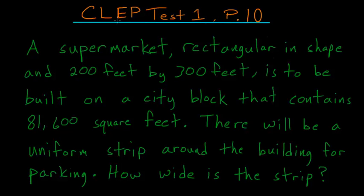In the 10th problem of this CLEP test, we have another word problem. So a supermarket, rectangular in shape and 200 feet by 300 feet, is to be built on a city block that contains 81,600 square feet. There will be a uniform strip around the building for parking. How wide is this strip?